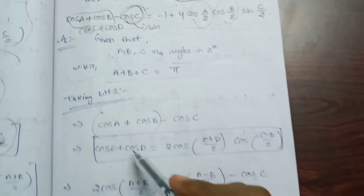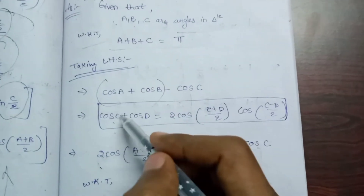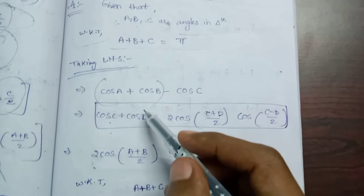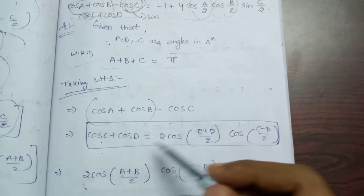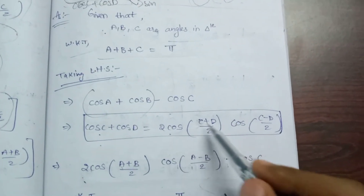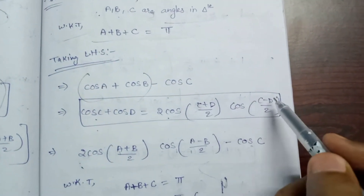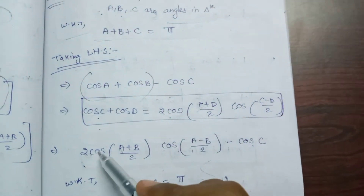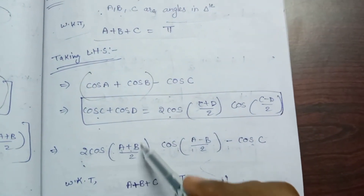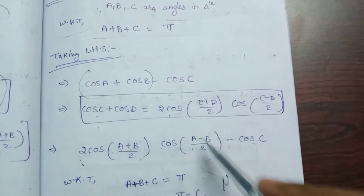Cos A plus cos B — we apply the sum-to-product formula: cos C plus cos D equals 2 cos((C+D)/2) cos((C-D)/2). So we apply 2 cos((A+B)/2) into cos((A-B)/2).